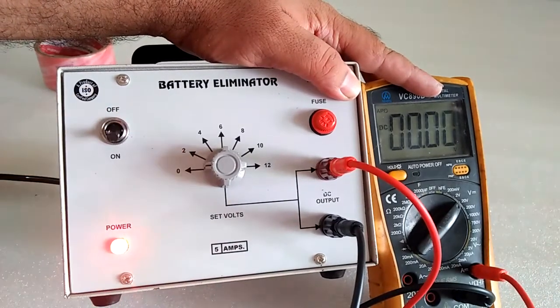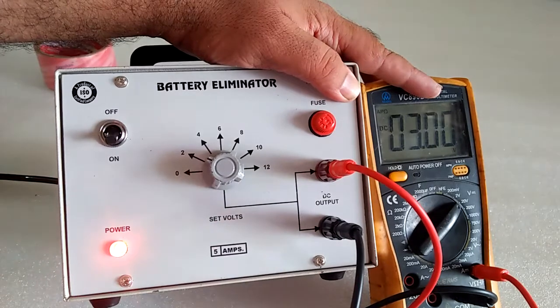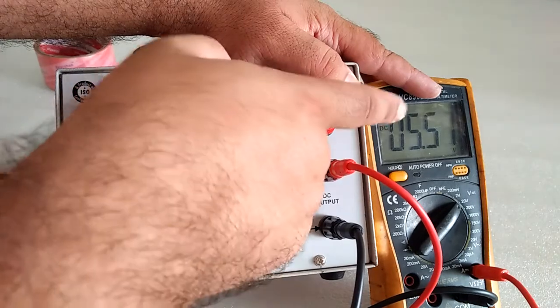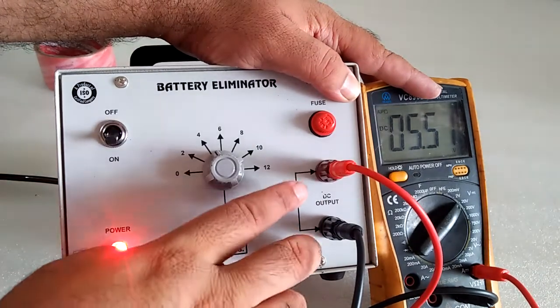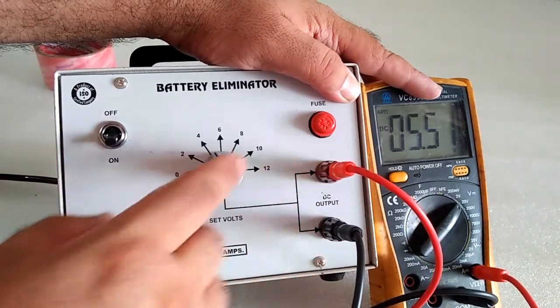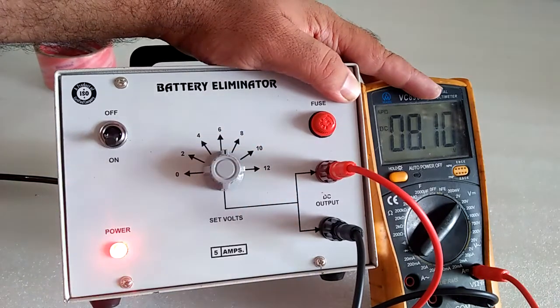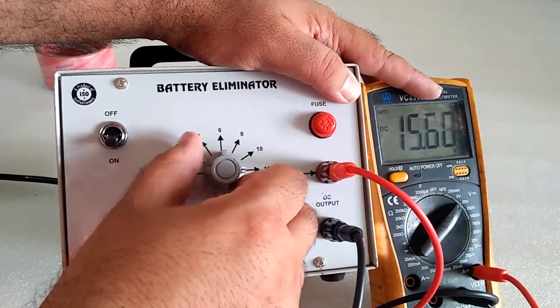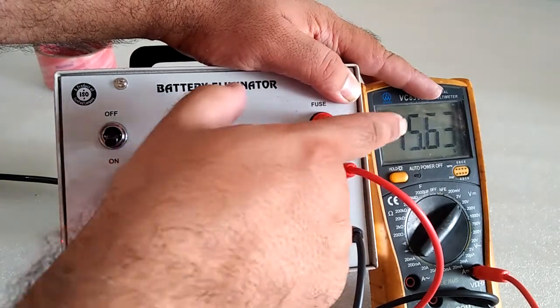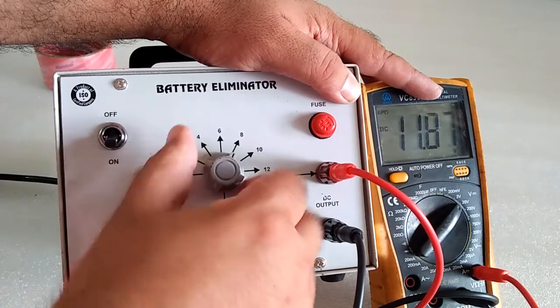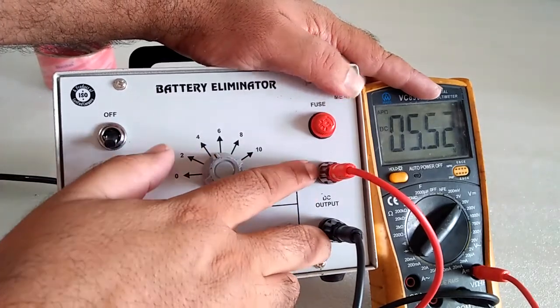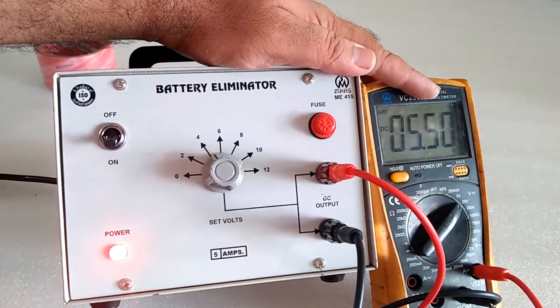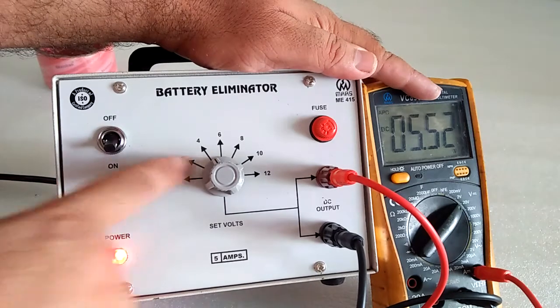Switch on the supply. From 0 volt to around 2 volt, it gives you the value at no-load. When we put the load, then it gives you the exact voltage. Here you see there are some extra voltage values on the multimeter, but when you put the load, it will be the exact value as you have selected.